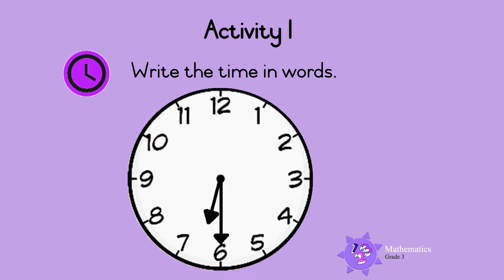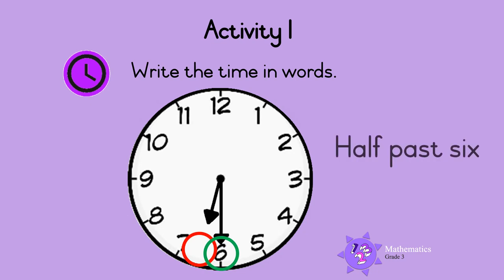Last one. The hour hand points between six and seven, so the time is six hours and some minutes. The minute hand points to six — this shows thirty minutes, so the time is half past six. Well done!